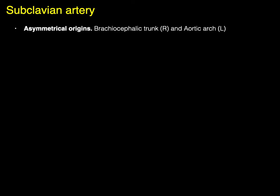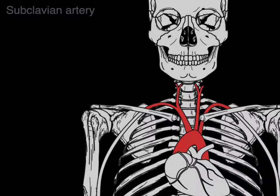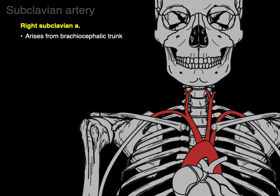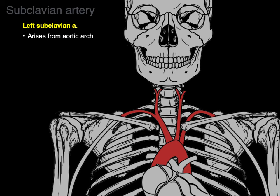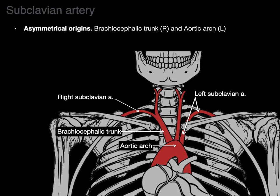The subclavian artery is asymmetrical in its origin, meaning the two arteries have different origins — one from the brachiocephalic trunk on the right and one from the aortic arch on the left. Zooming in: the right subclavian artery arises from the brachiocephalic trunk, and the left subclavian artery comes from the aortic arch, showing the asymmetrical origins of both subclavian arteries.